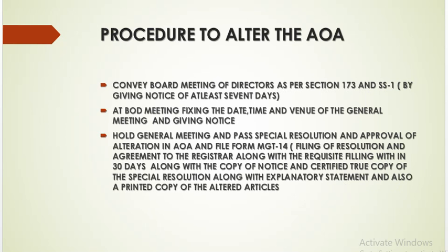Special resolution means 75% of votes should be in favour. After approval of the alteration of article of association, the company is required to file Form MGT-14 — filing of resolution and agreement — to the Registrar along with the requisite filing fee within 30 days, along with a copy of the notice, a certified true copy of the special resolution with the explanatory statement, and a printed copy of the altered articles.